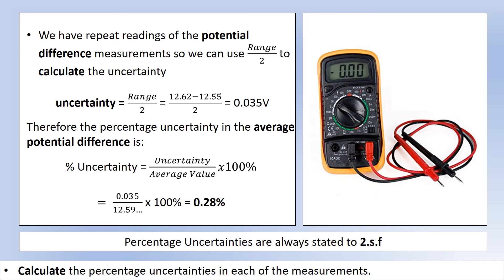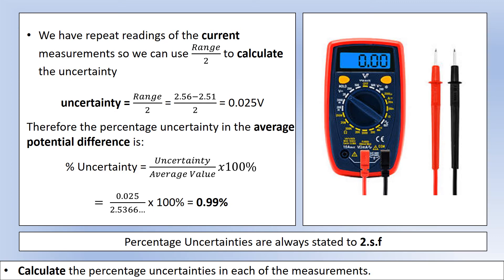We can do the same thing for the voltmeter and the ammeter. This time we can actually calculate what the uncertainty is, because we have repeat readings of potential difference, because it should have been the same the whole time. So I've used range over 2 to calculate the uncertainty, and then calculated percentage uncertainty. And I've done exactly the same thing for current. Range over 2 to get uncertainty, divided by the value to get percentage uncertainty.